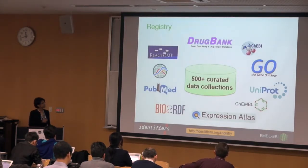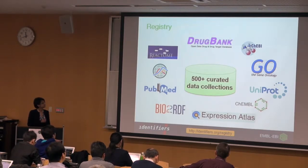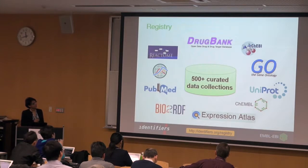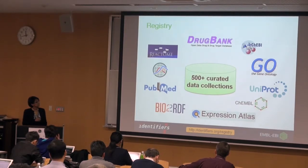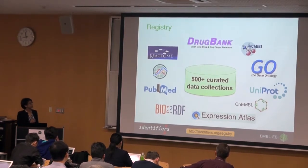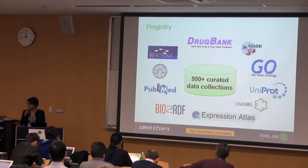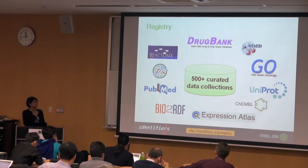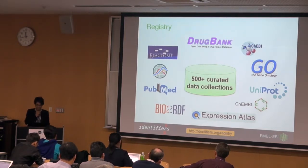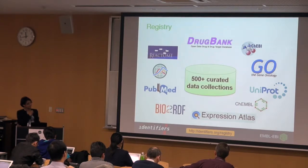We have about 500 curated data collections in our registry, and these are not automatically extracted from any of the resources. This is done by a curator in the Identifiers.org project, and we have almost all the widely used resources in our registry. You can access the Identifiers.org registry from the link below.